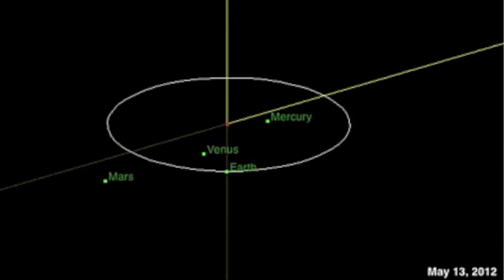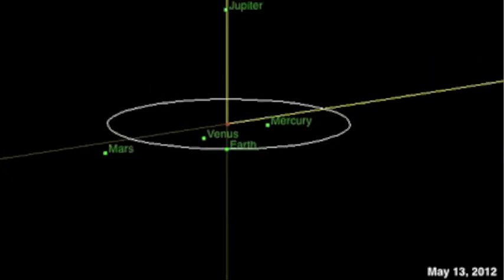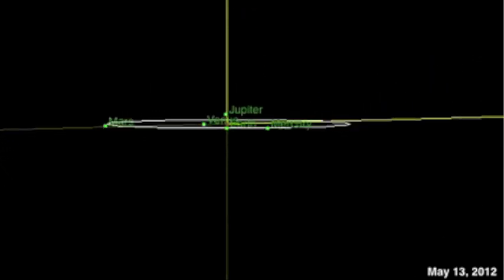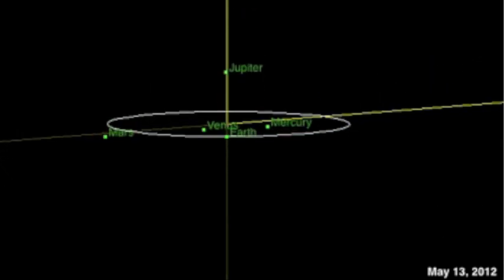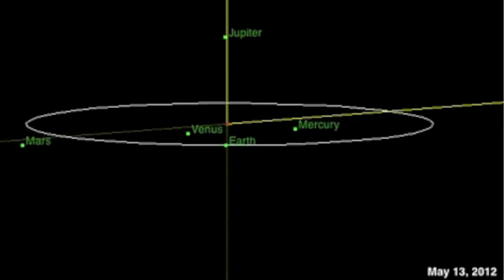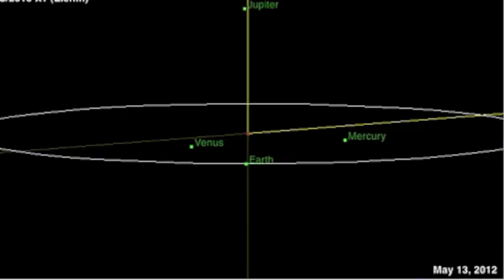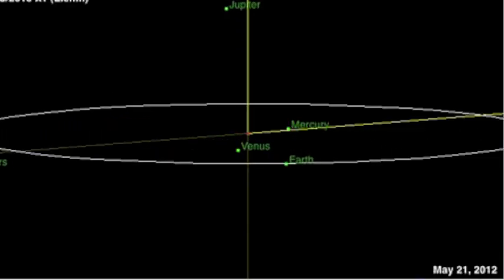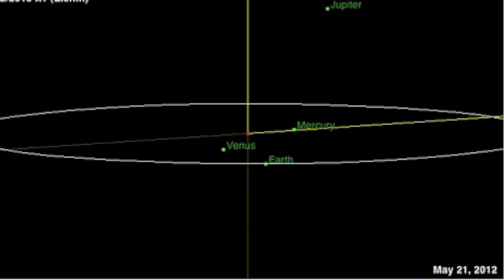Giving Stellarium a break here in favor of the JPL. You can see that today is the Jupiter conjunction. As we move forward, remember that May 20th is the eclipse. Right after that, Mercury conjoins Jupiter on the way to conjoin the Sun herself.